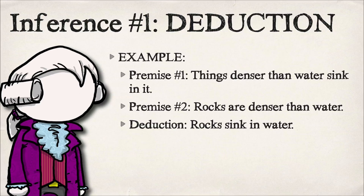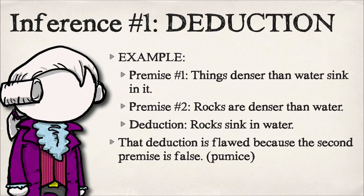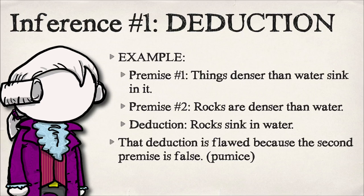A silly example: Frank is bald, dads are bald, so Frank is a dad. That obviously shows some of the flaws of a bad premise — if your premise is wrong, then your deduction will be wrong. The idea of rocks sinking also has a flaw: consider pumice, which floats.